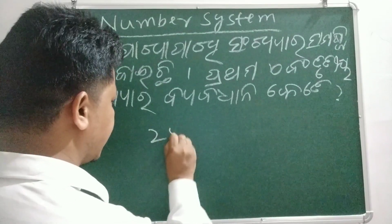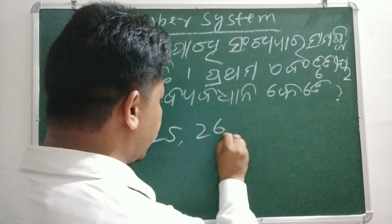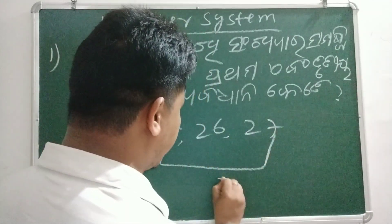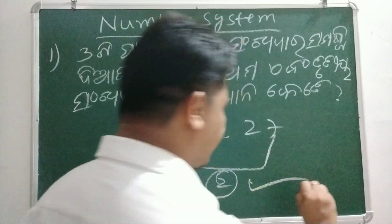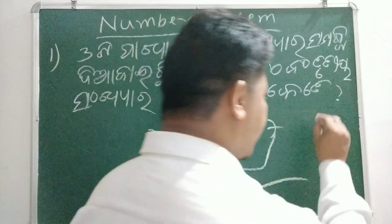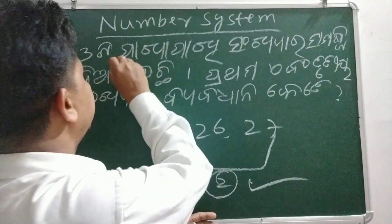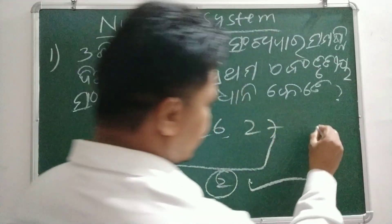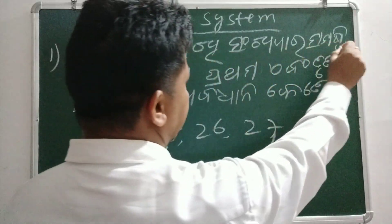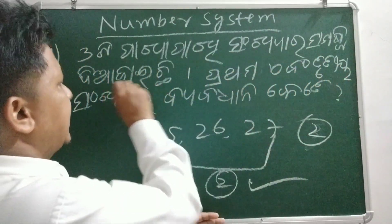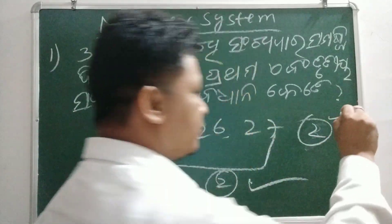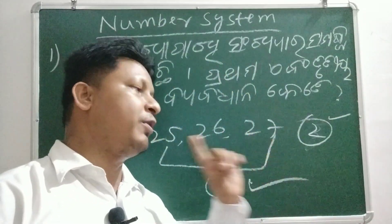25, 26, 27. The difference is 2. The answer is 2.